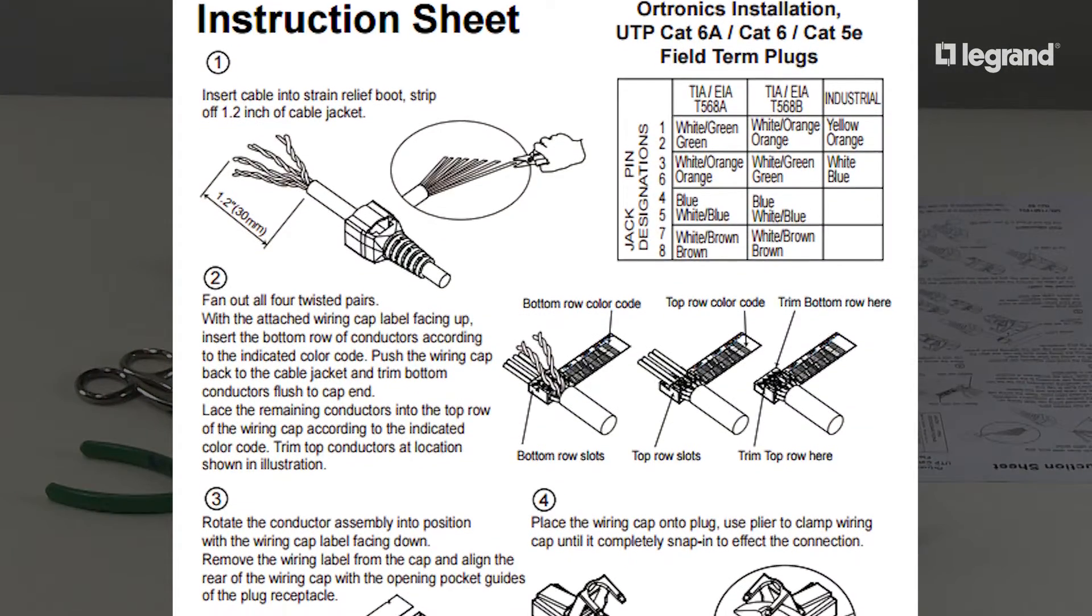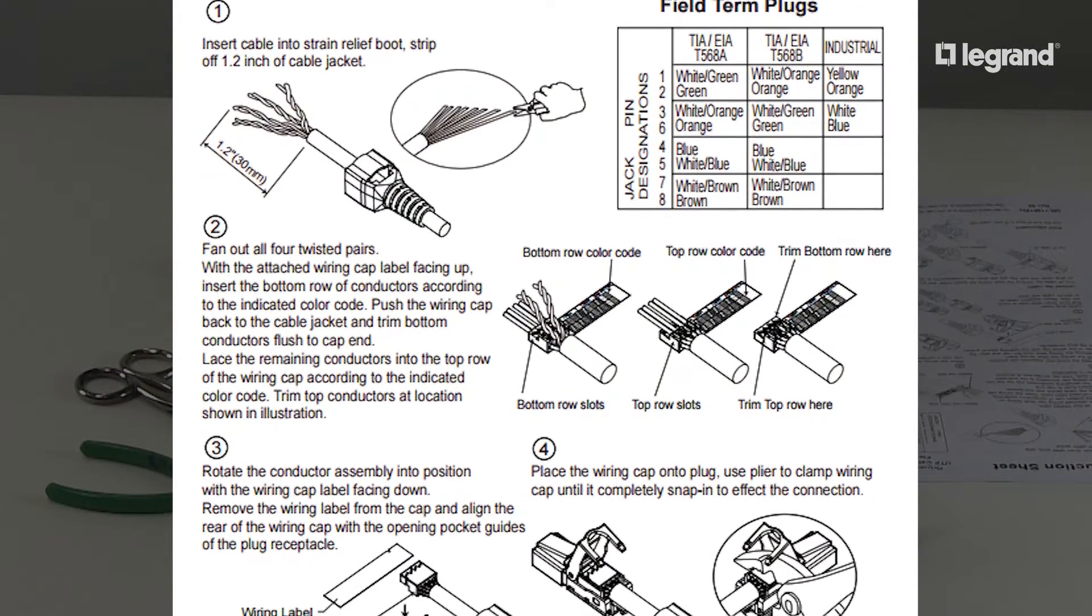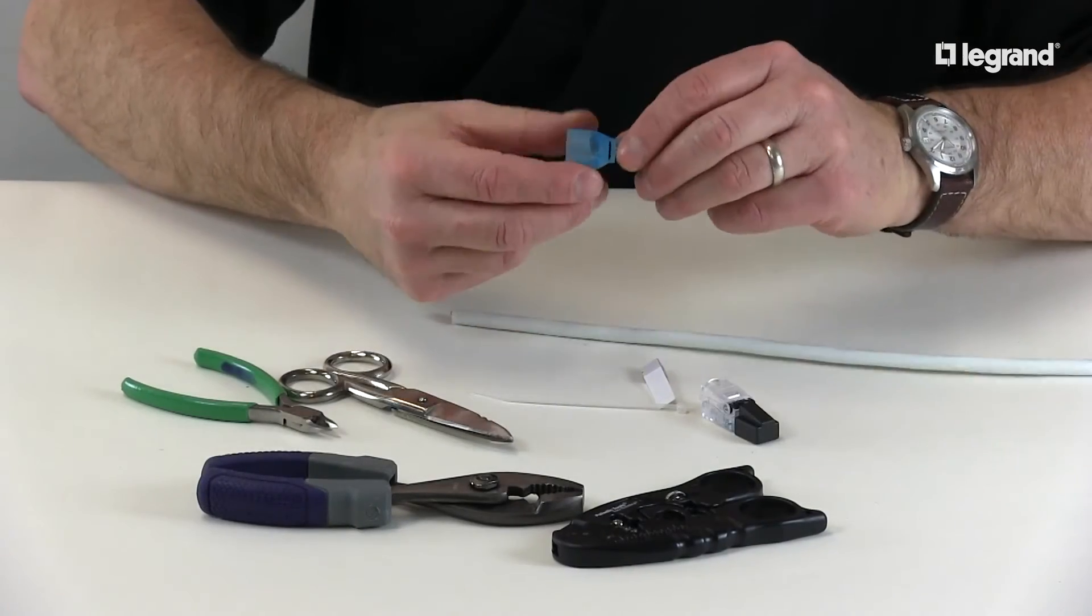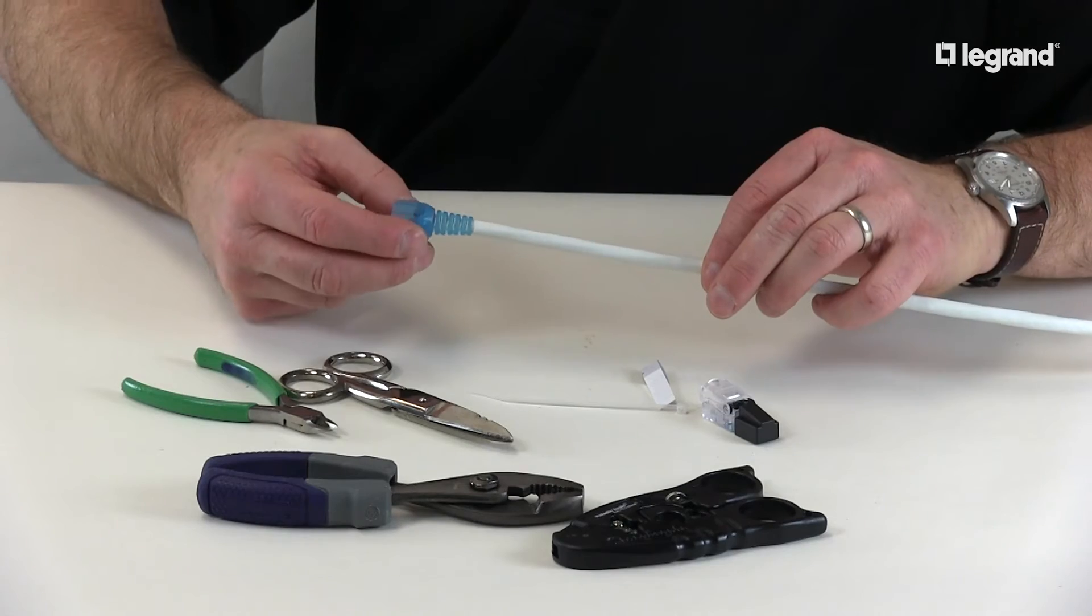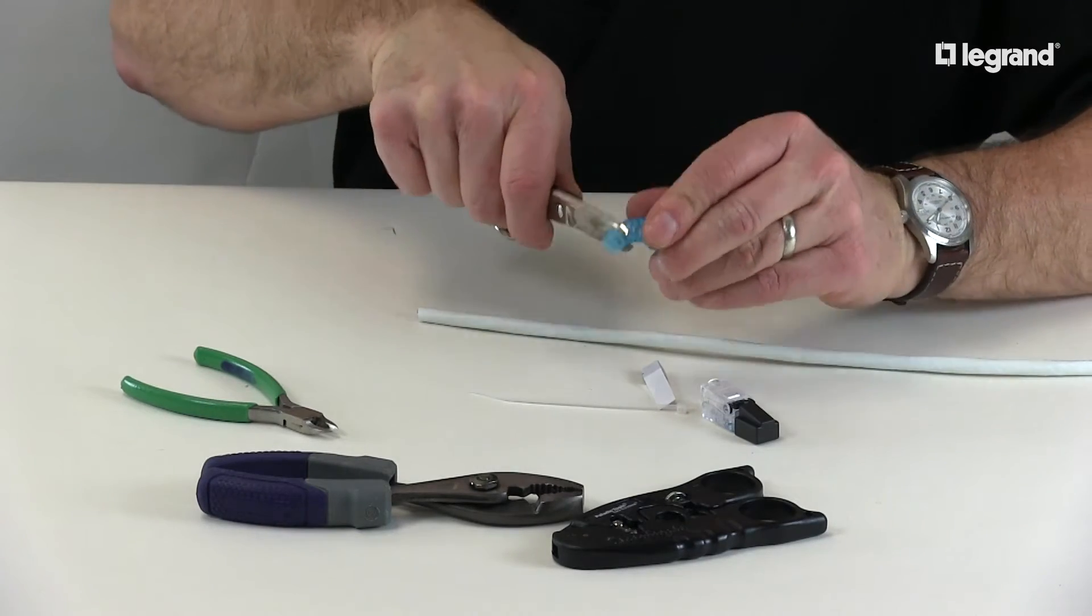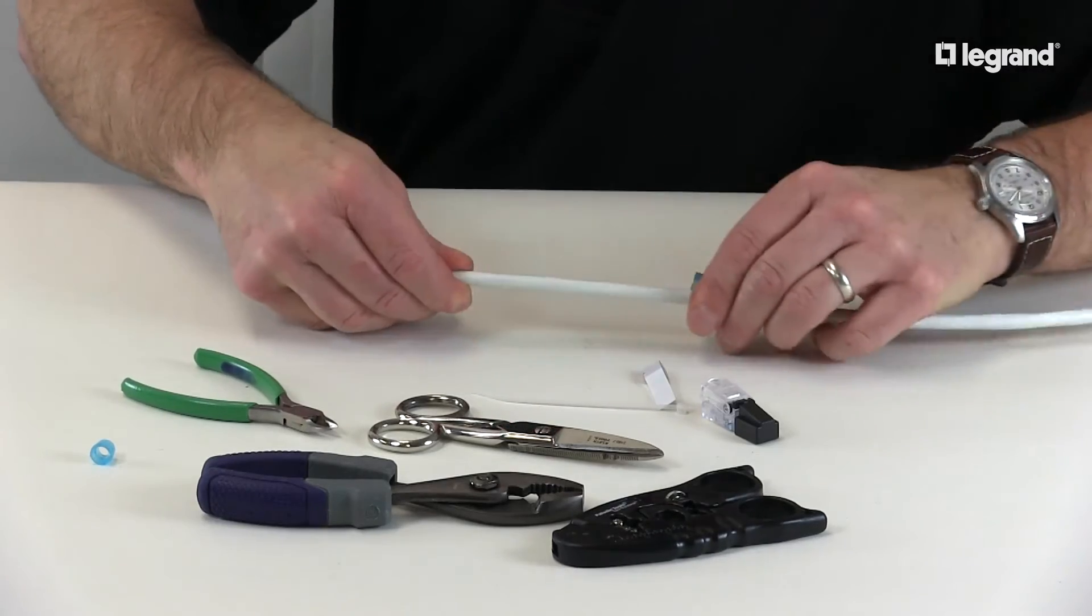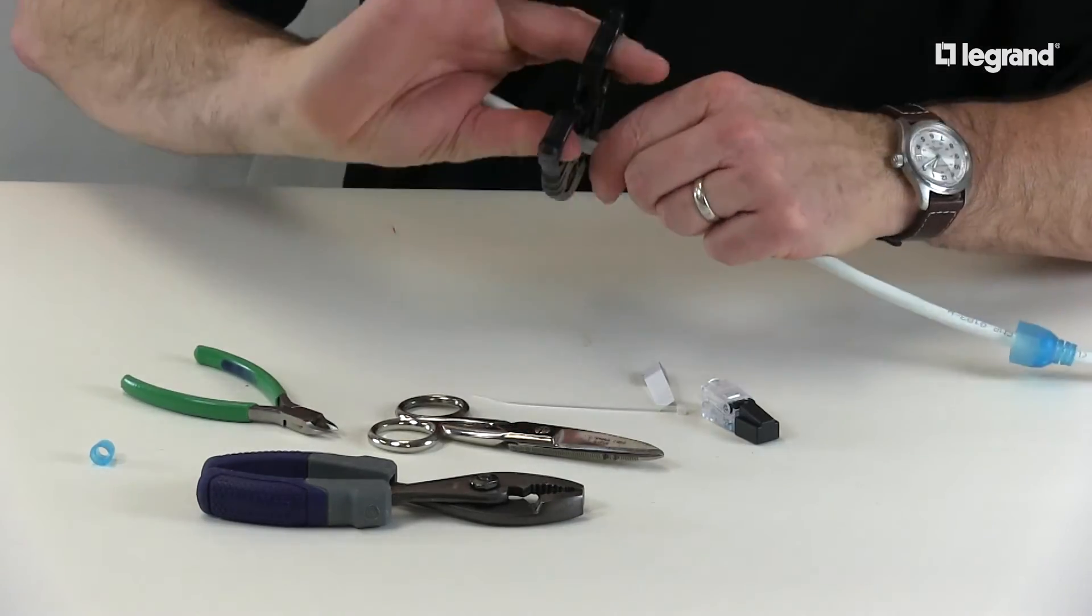We recommend keeping the supplied instruction sheet handy in case you need to reference it during the termination. Before you begin your termination, insert your cable into the strain relief boot. If at first the boot doesn't fit over the cable, trim the boot down to size until you're able to slide it over the cable's jacket. Now you're ready to start the termination.